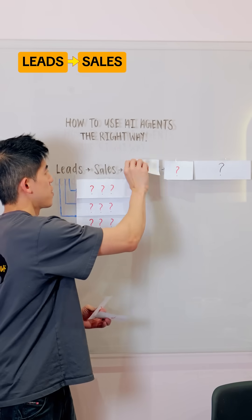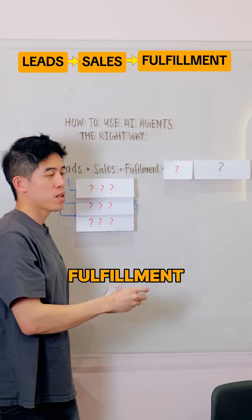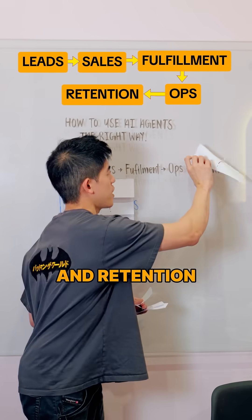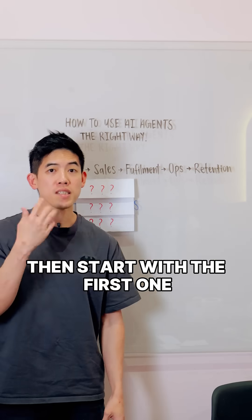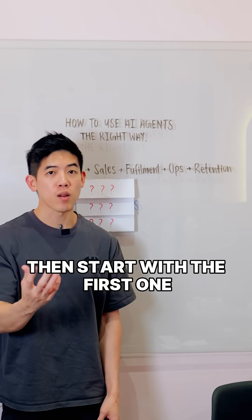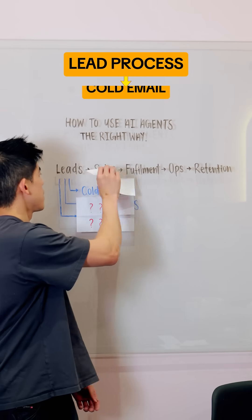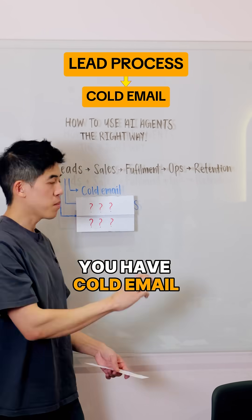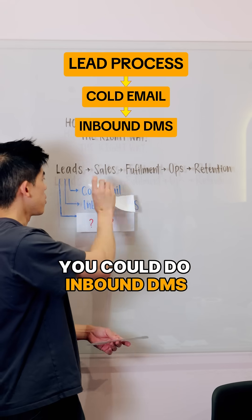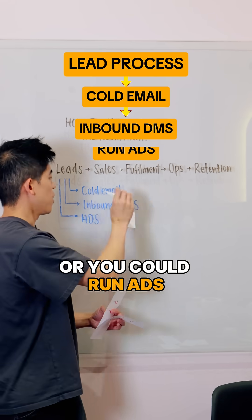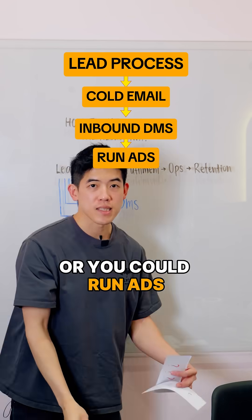Leads, sales, fulfillment, ops, and retention. Then start with the first one. What happens in your lead process? You have cold email, you could do inbound DMs, or you could run ads.